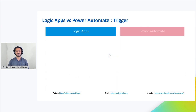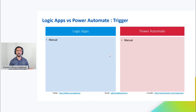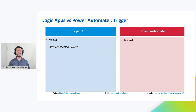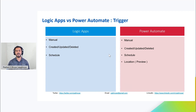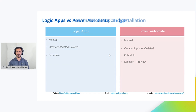When it comes to triggers, most are identical. We have manual triggers available in both Logic App and Power Automate. We have event-based triggers like created, updated, and deleted. Both can also start on a schedule. However, Power Automate has one extra trigger not available in Logic Apps — a location-based trigger. It is currently in preview, but there are some really cool scenarios we can implement using that location-based trigger in Power Automate.